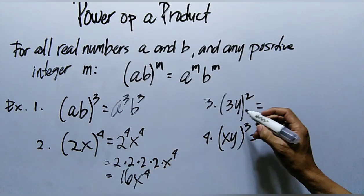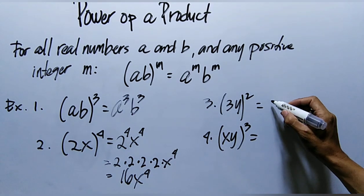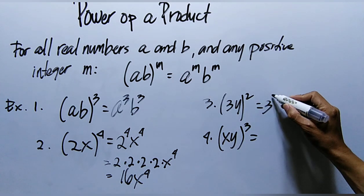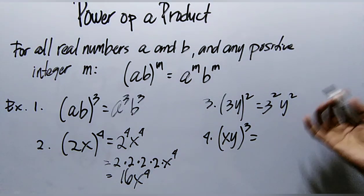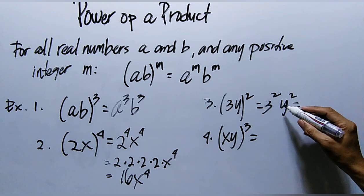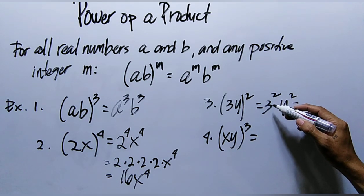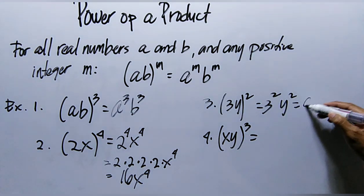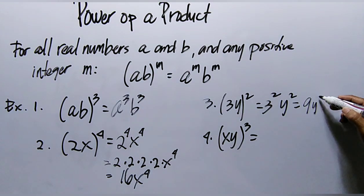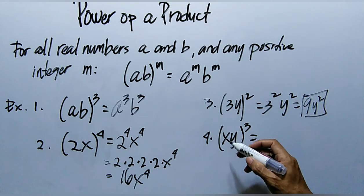Example 3: the quantity of 3y raised to the power of 2. We raise 3 to the exponent 2 and raise y to the exponent 2, then simplify. We multiply 3 by itself, so 3 times 3 equals 9. Then we copy y squared. So the final answer is 9y squared.